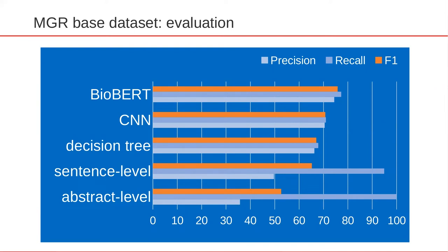I describe these results starting from the bottom. The most crude approach is to assume a relationship every time a gene and the word melanoma occur in the same abstract. Unsurprisingly, this method achieved 100% recall but has very low precision. The next baseline, called sentence level, assumes a relationship every time there is a co-occurrence of a gene and melanoma in the same sentence. Again, recall is very high and precision is better than in the previous case, but still only about 50%. We then apply the traditional machine learning algorithm, decision trees, which produced more balanced results with precision and recall around 65–68%. The more recent method of convolutional neural network scored around 70% on both precision and recall.